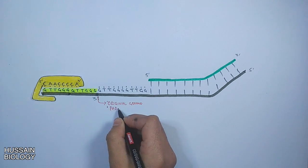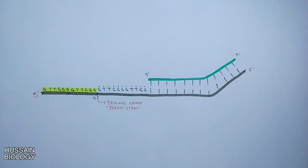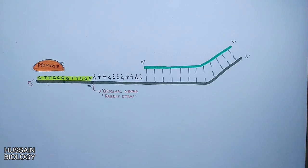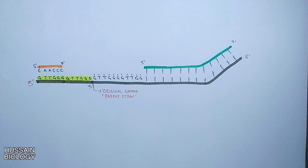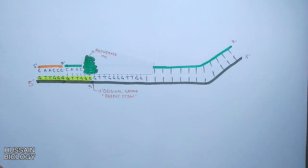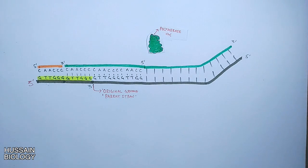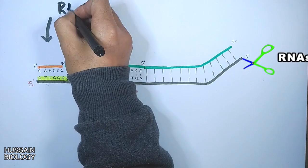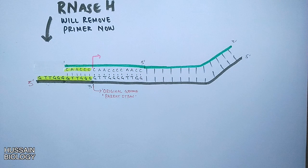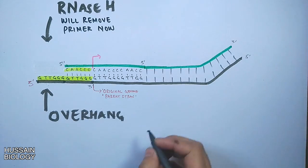Again, we cannot synthesize the upper strand because it is devoid of a 3' hydroxyl end. But here primase comes in and lays down a primer at the end, thus providing the 3' hydroxyl end. Then DNA polymerase alpha comes in and starts adding deoxyribonucleotides to the 3' terminus end of the primer, and by this the upper strand is synthesized. Then RNase H works on the primer and removes it since it's a ribonucleotide sequence, so again we have the daughter strand missing the last few nucleotides.